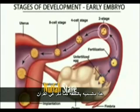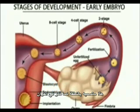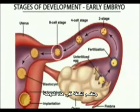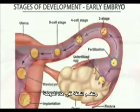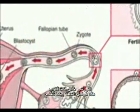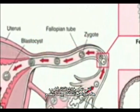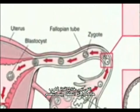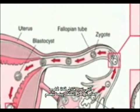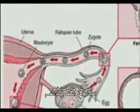The nutfa undergoes division, which we call cleavage, as it passes down the uterine tube. These are the stages of the nutfa as it undergoes cell division.